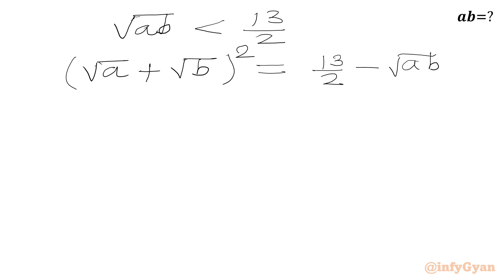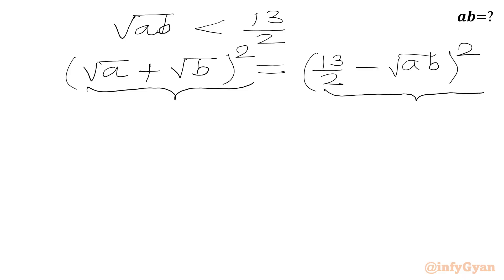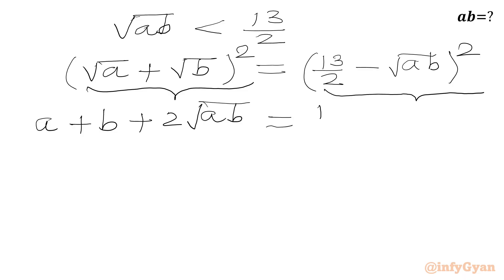Squaring both sides, we apply the (a+b)² formula on the left and (a−b)² on the right. The left-hand side gives (√a)² plus (√b)² plus 2√(ab), which is a plus b plus 2√(ab). The right-hand side gives (13/2)² plus (√(ab))² minus 2 times (13/2) times √(ab), which is 169 over 4 plus ab minus 13√(ab).